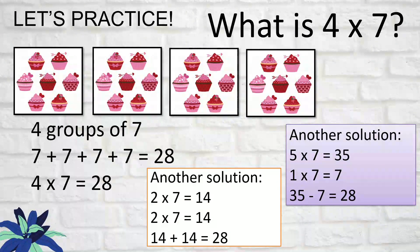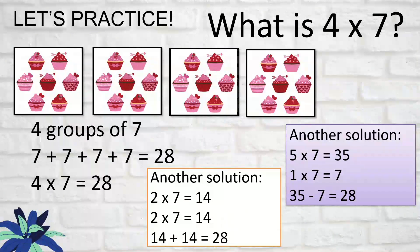Another method using subtraction: five times seven is 35, and one times seven is 7. Since five minus one is four, subtract 35 minus 7, which gives 28. That's four times seven.